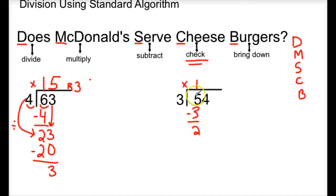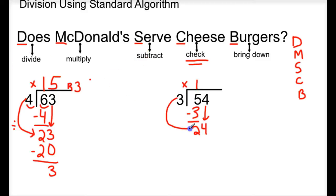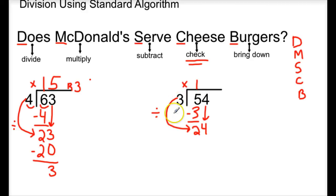Next step is to check — is 2 less than 3? Yes, it is. So we can move on to bring down, and we are going to bring down this 4. Now we start all over again, back to dividing. But remember, this time we need to go this way. It's 24 divided by 3. We're not going to come back up into the dividend and say 4 divided by 3. We need to stay here. 24 divided by 3 is 8. We put the 8 in the ones place over the 4.